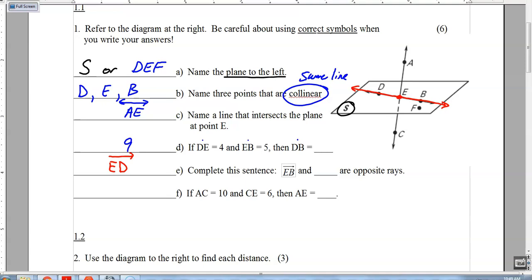Part F, if AC is 10, and CE is 6. So let's come over here, and let's get in our drawing. AC is 10. So that is this entire distance here is 10. CE is 6, and we need to figure out what AE is. So I can do 10, subtract 6, and get an answer of 4.